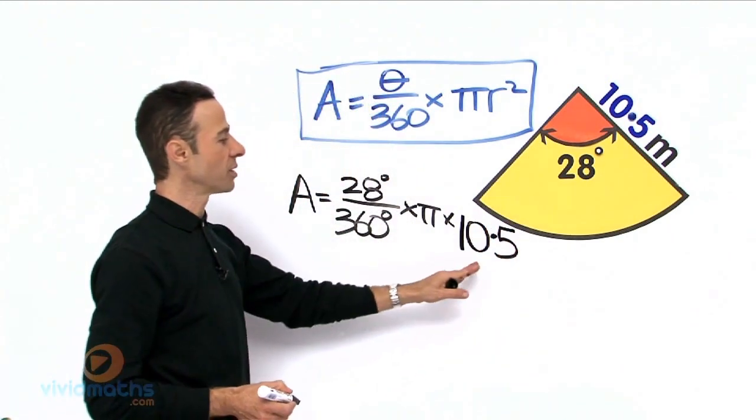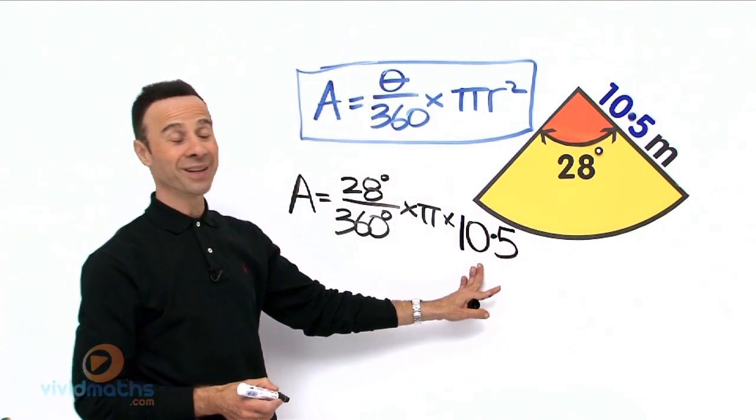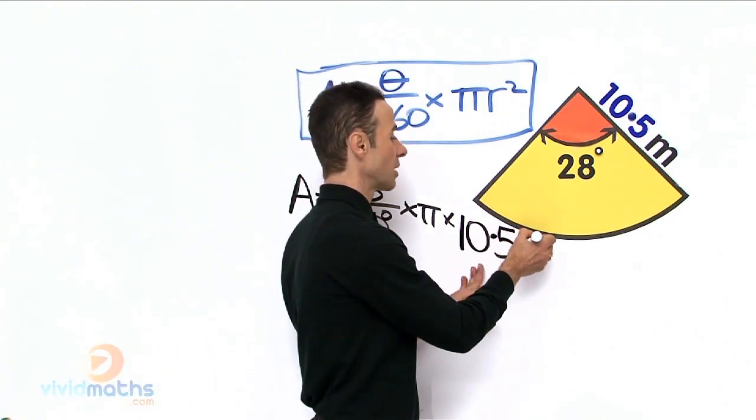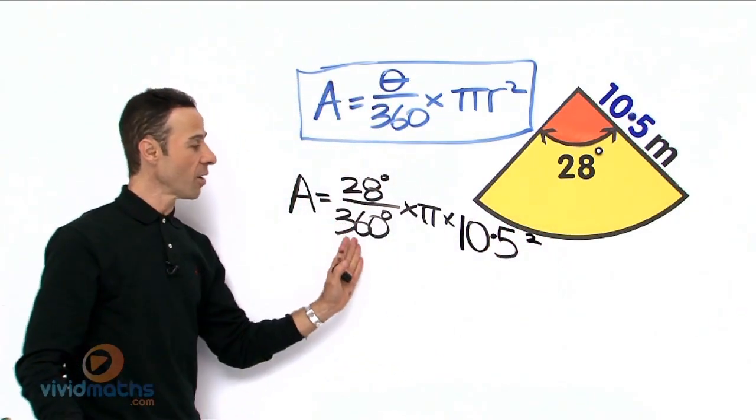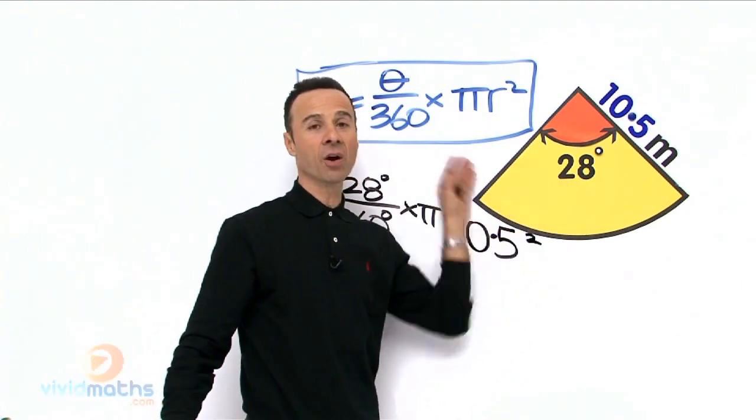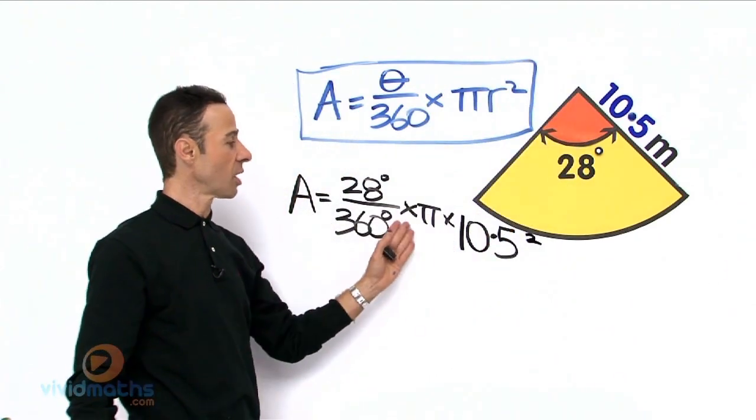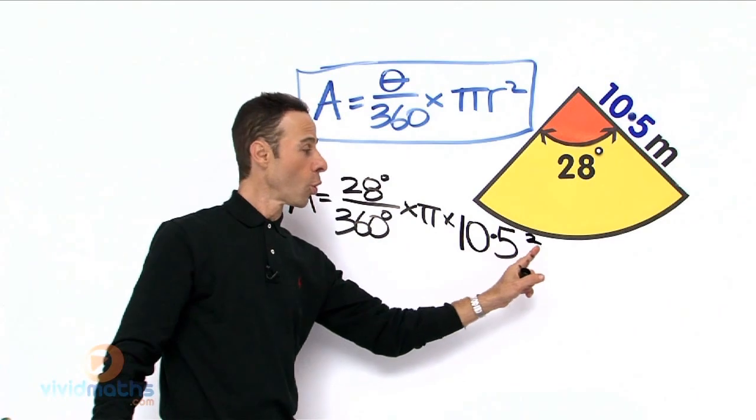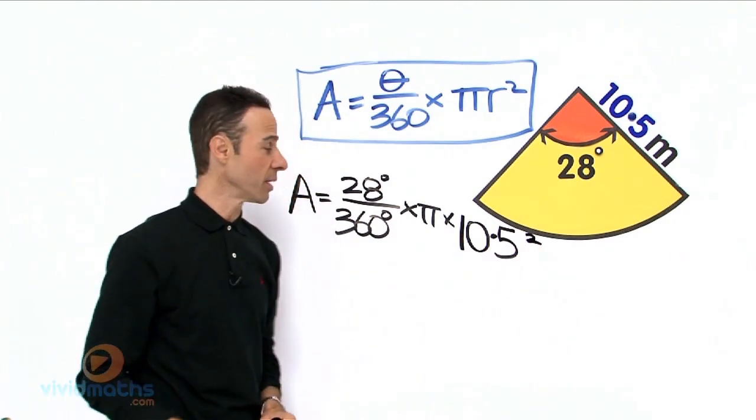Now what we need to do with the 10.5 is to square it, so let us square it. So 28 over 360—28 of the whole thing, which is 360 times pi times 10.5, all squared. Take note of that squared.